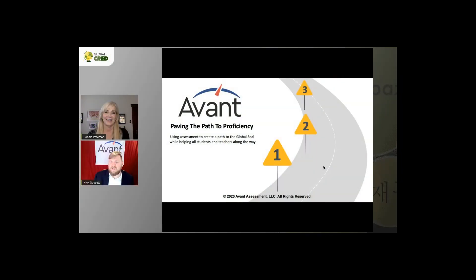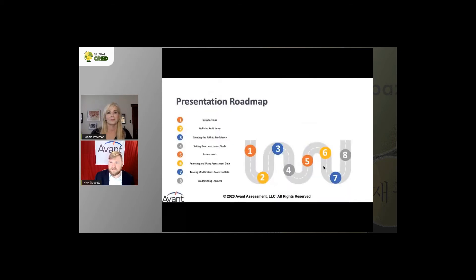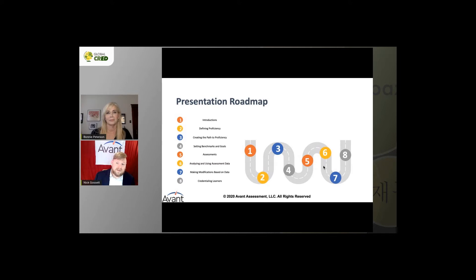Hi, everyone. Today we're going to be talking about paving the path to proficiency — how you can use assessment to create a path to the Global Seal while also helping your students and teachers along the way. The presentation will have a few parts: introductions, defining proficiency, creating a path to proficiency, setting benchmarks and goals, the assessments that can be used, analyzing and using assessment data, making modifications based on data, and credentialing our learners, which is why we're here for the Global Credit event.